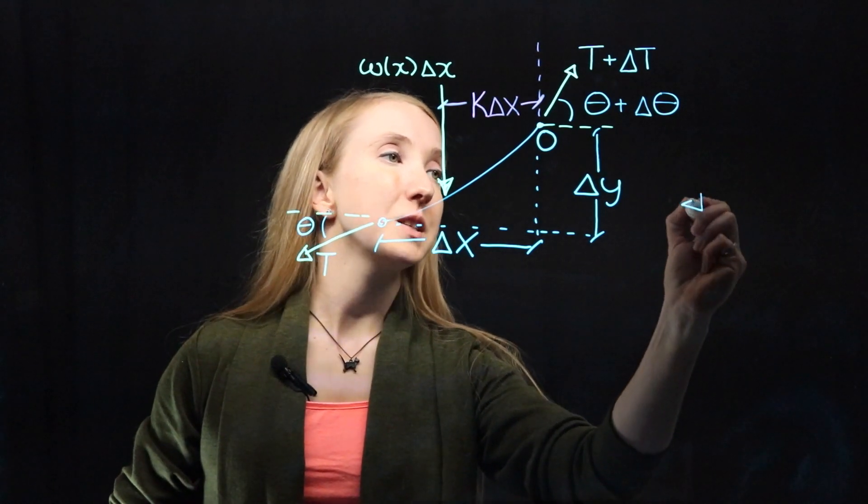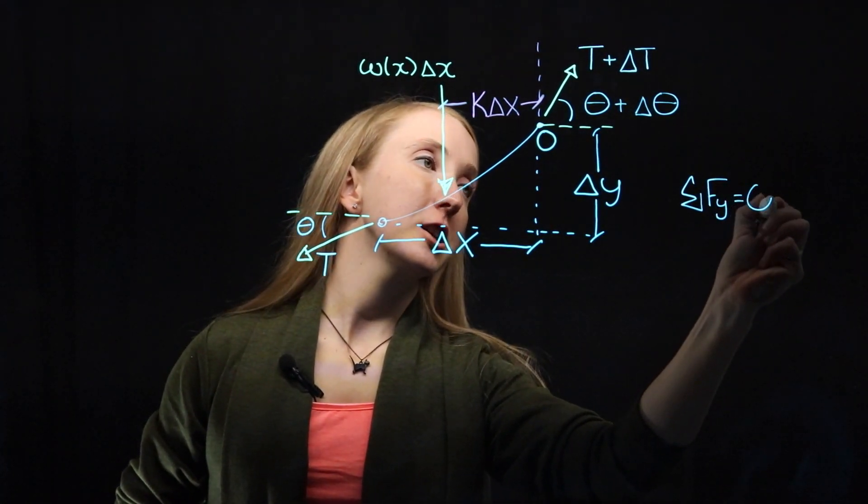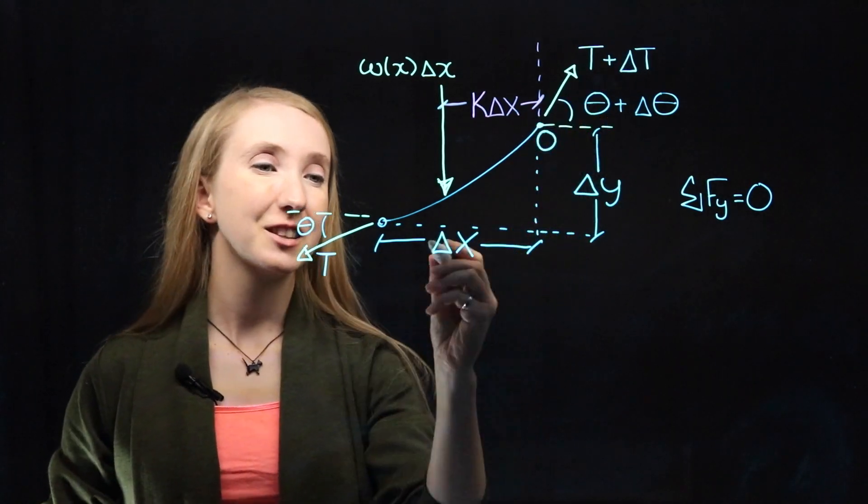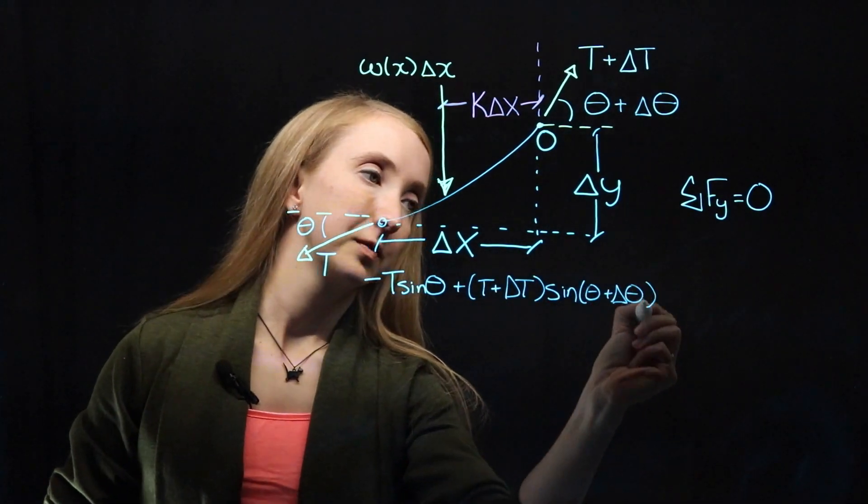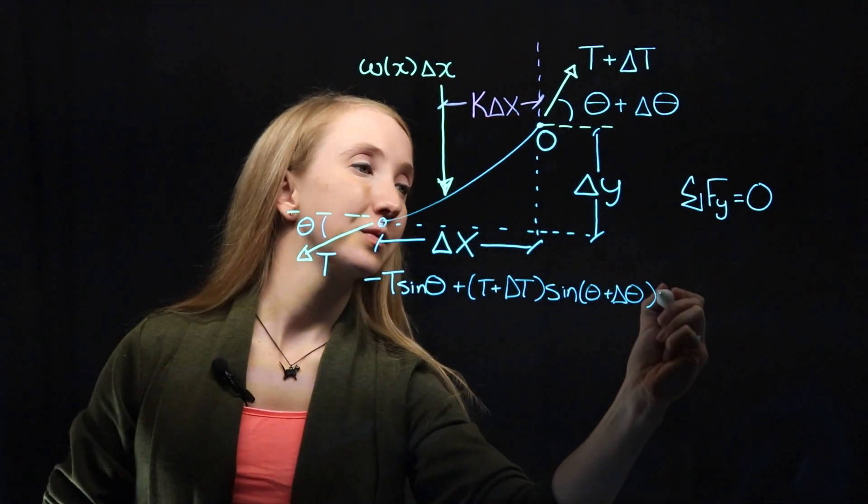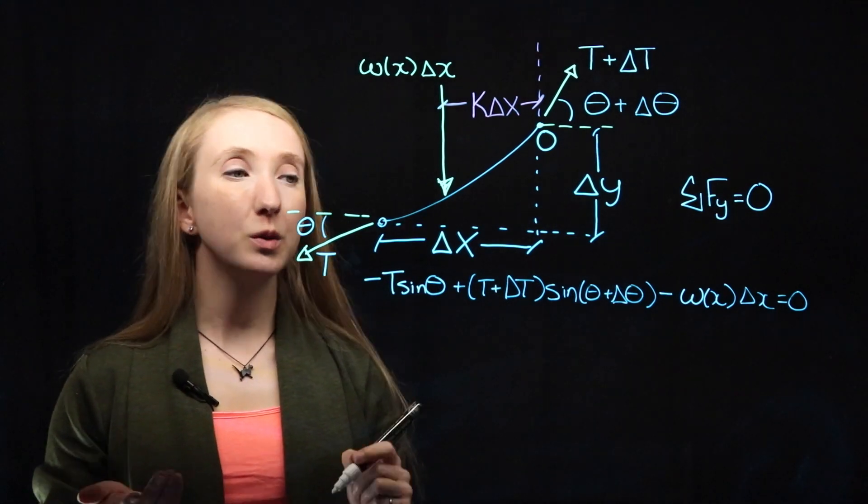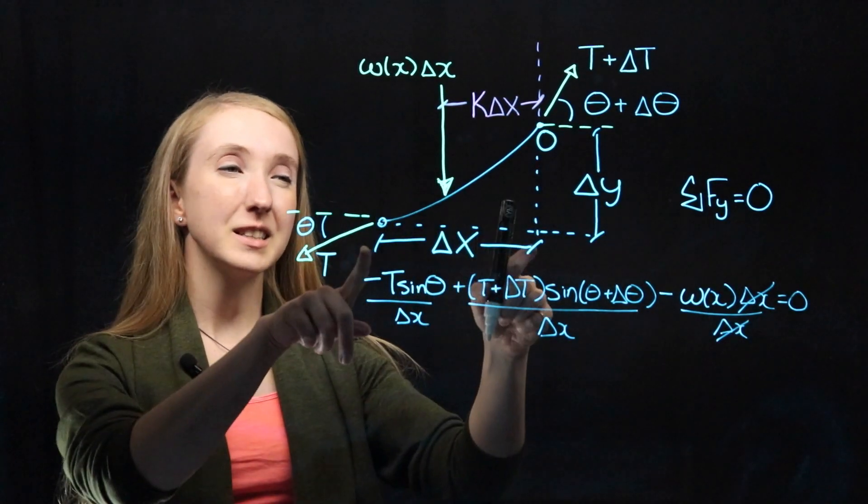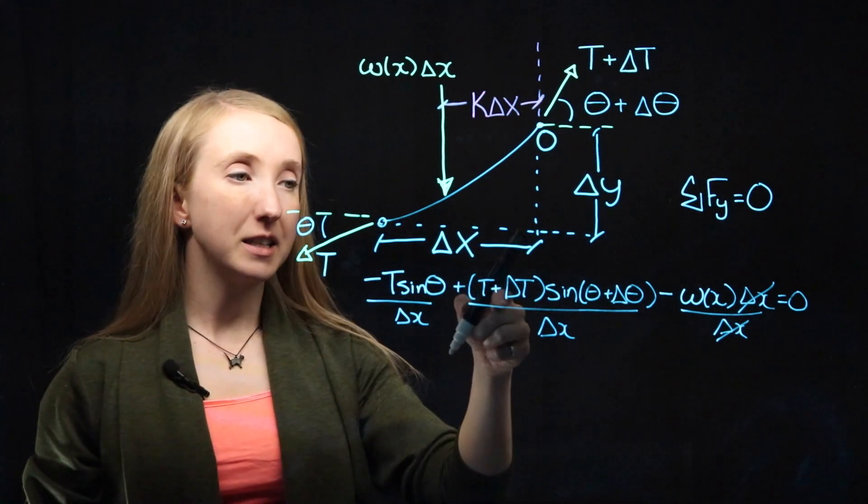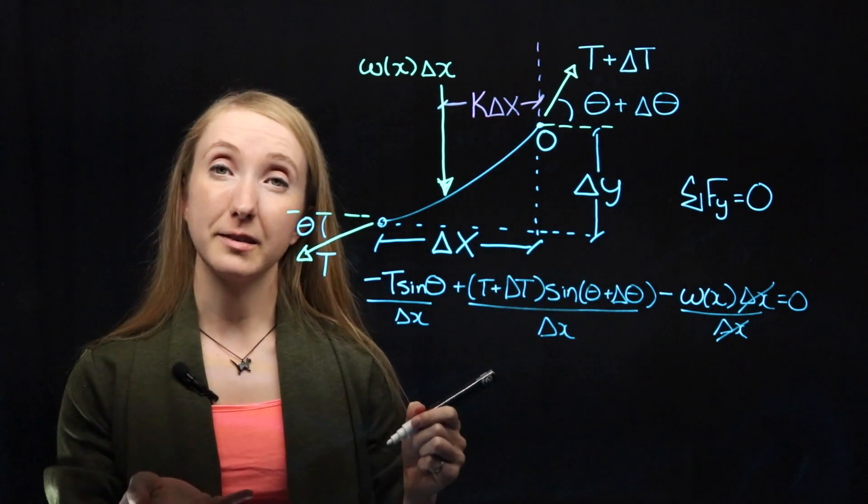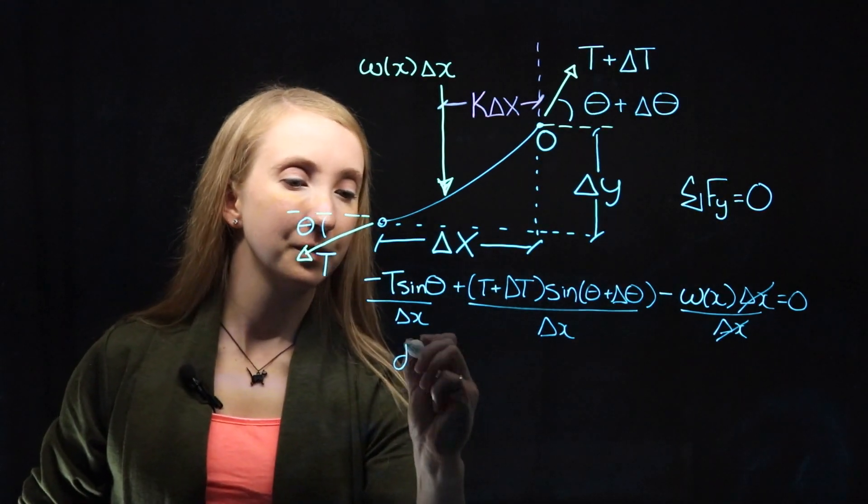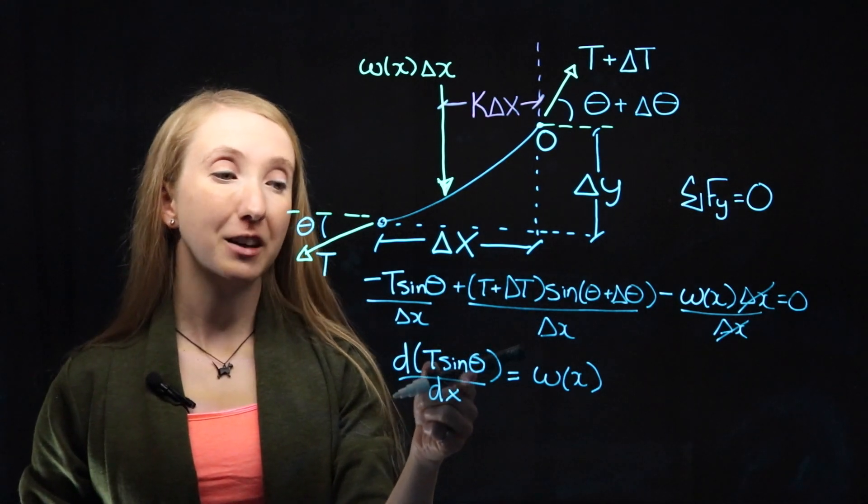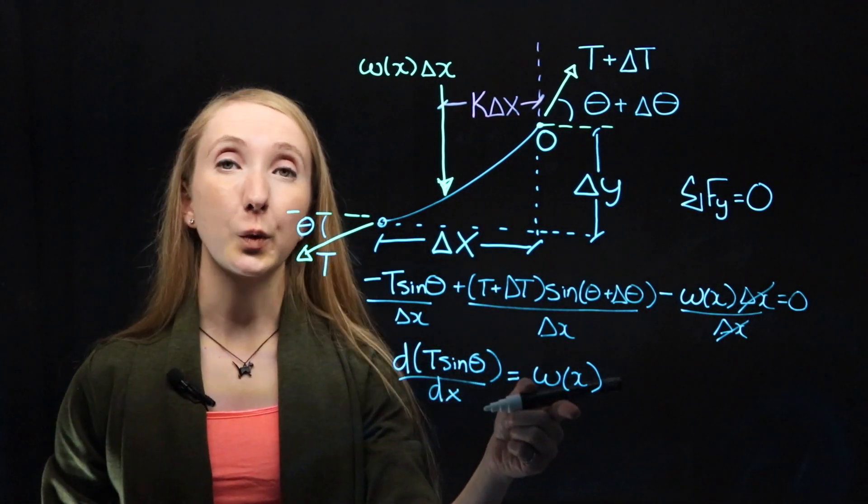In the Y direction, we also have equilibrium. So the sum of F in the Y direction is 0. Our forces in the Y direction are the Y components of the tension at this end and at this end, and our net applied force in the Y direction. Just like before, we'll divide everything by our segment length delta X. And as we consider delta X getting smaller and smaller as it approaches a point, our delta T and our delta theta will also approach 0, which lets us rewrite this statement as 0, which says that the change in the vertical component of our tension in our cable is equal to our applied force at our point X.